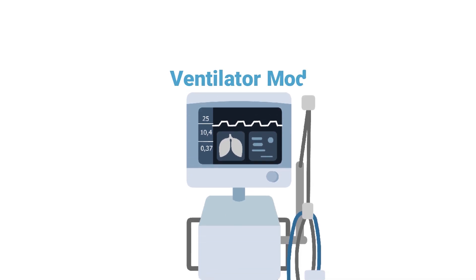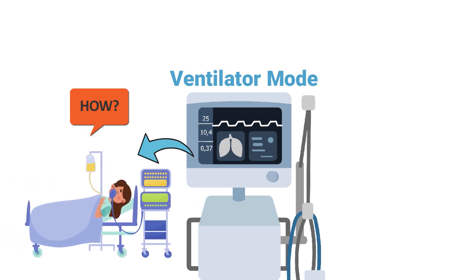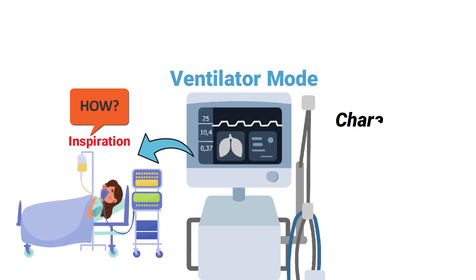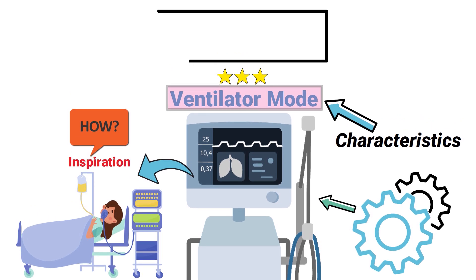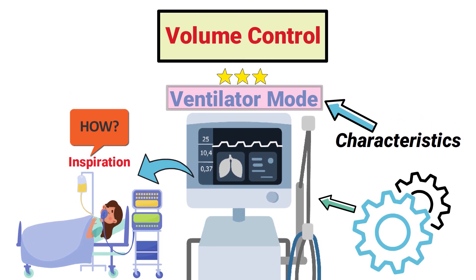A ventilator mode is a way of describing how the mechanical ventilator assists a patient with inspiration. The characteristics of a particular mode control how the ventilator functions. Understanding each of the different modes is one of the most important aspects of mechanical ventilation, and one of the primary control variables we need to talk about is volume control.